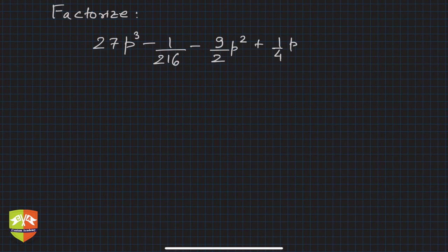Hey hello friends, welcome again to a session on factorization of algebraic expressions. We have been solving a lot of questions in this series, and continuing that trend, we are now trying to factorize this particular expression. The expression is 27p³ - 1/216 - (9/2)p² + (1/4)p.